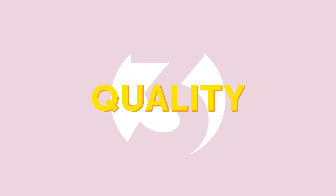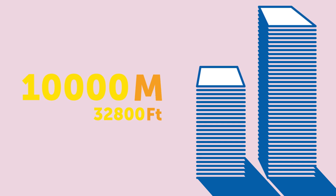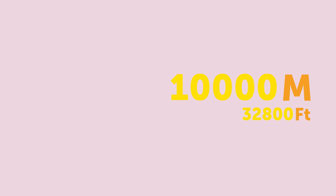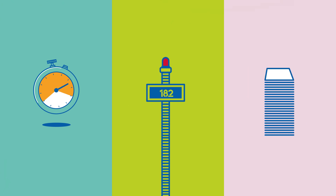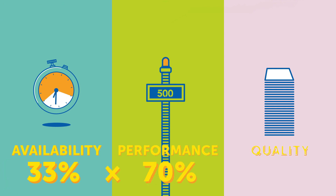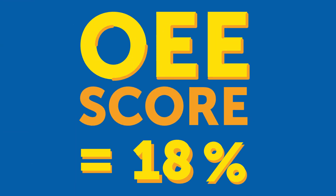Quality is a key selling point that can differentiate you from your competitors. Let's say you have a printing order of 10,000 linear metres, but due to make-ready waste or bad printing quality, you might waste 2,000 metres in unsellable print. That results in 8,000 metres of sellable product, so your quality metric is only 80%. Taking this example and looking at our overall equipment effectiveness, we have press availability of 33% times performance of 70% times quality of 80%, which gives us a total OEE score of 18%.